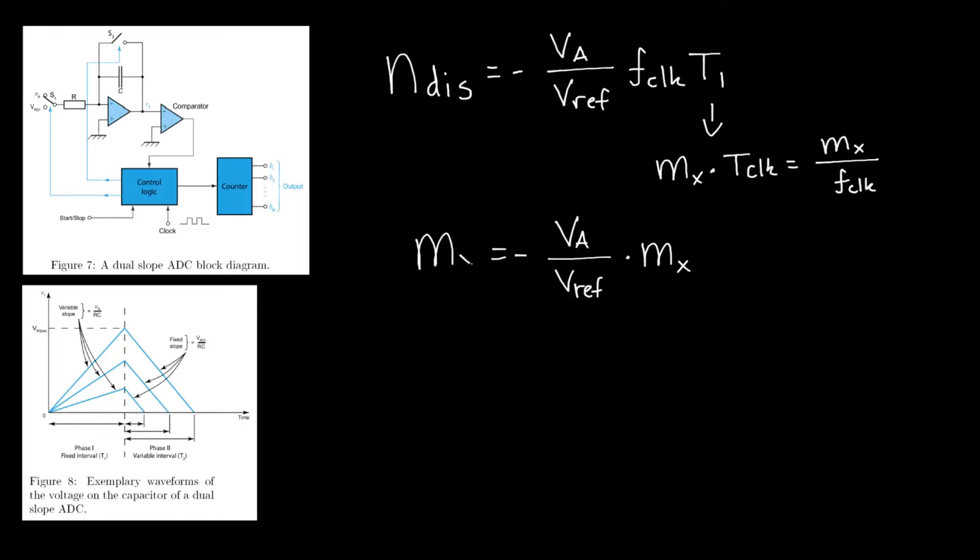So let's say that we want to count the maximum number, so that will be mx. Now clearly we can divide both sides by mx, so to get the maximum number counted on this ADC our input voltage should be the negative VREF, and that already implies that this VREF needs to be of opposite polarity of VA.